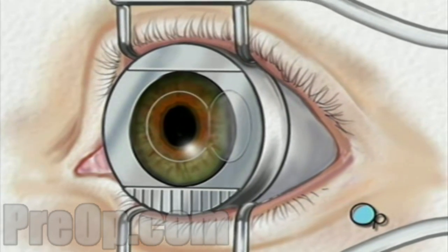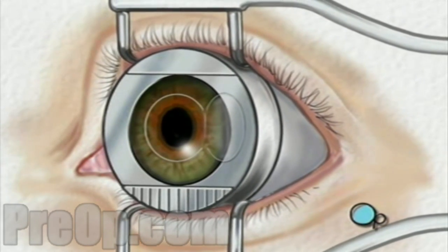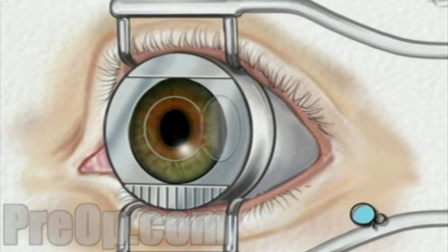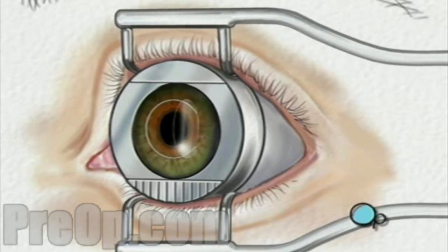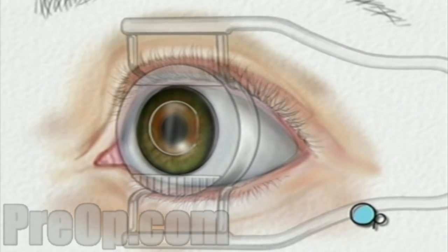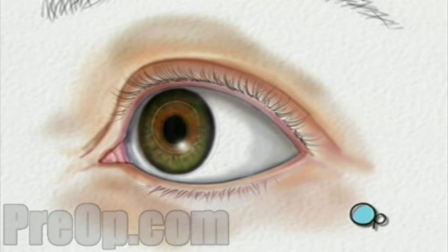The entire procedure usually takes about five minutes and is painless. The corneal flap is then closed and the surface is rinsed. Following the surgery, you'll be given protective contact lenses to wear for a few days while the corneal flap heals.